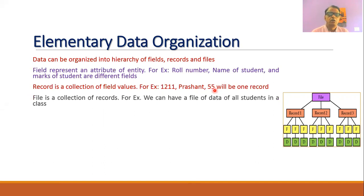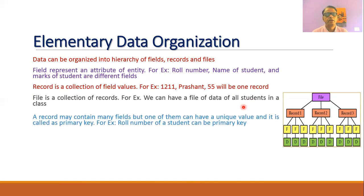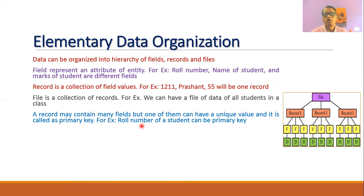A collection of all such records is called a file. As shown in the diagram, a file can have multiple records — each record consisting of multiple fields, every field having some data or value associated with it. So all the student data in a class or college can be called a file. A record may contain many fields, but one field with a unique value across all records is called a primary key. For students, the roll number is unique and serves as the primary key.